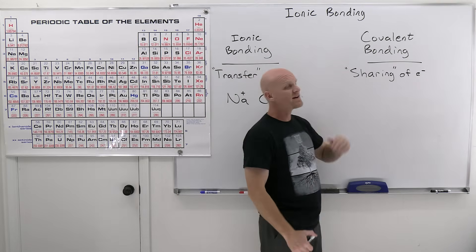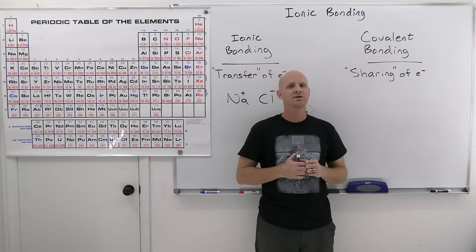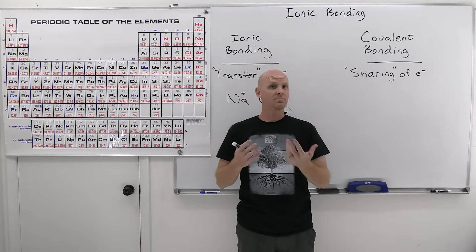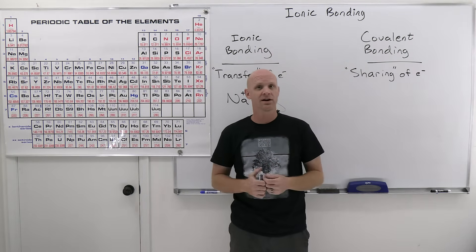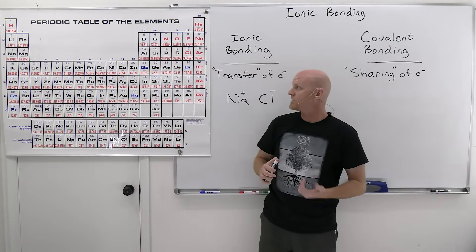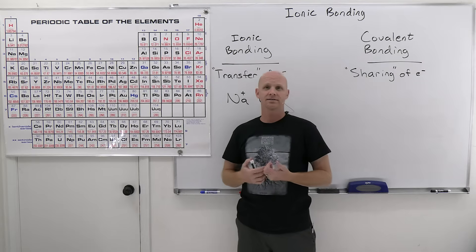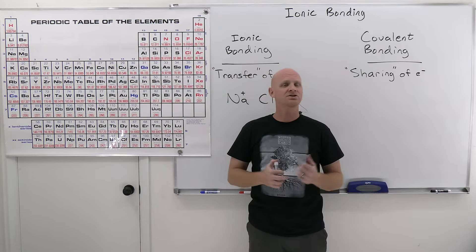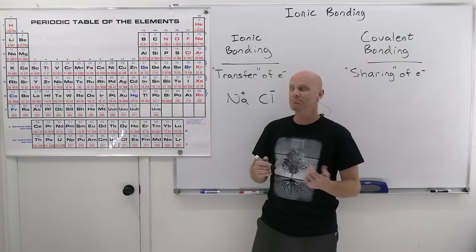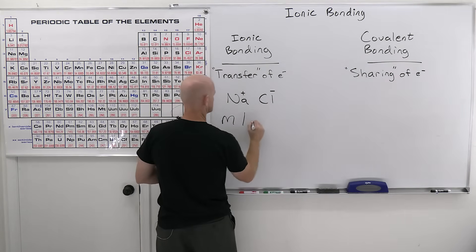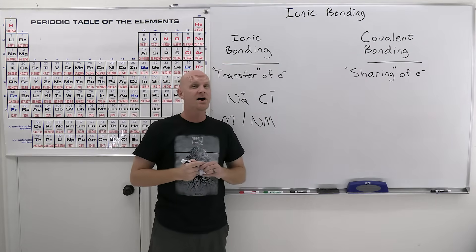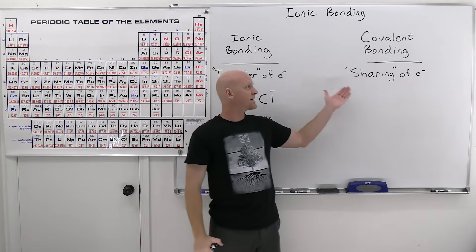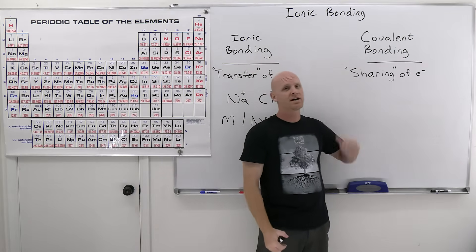In contrast, covalent bonding is the sharing of electrons — electrons don't transfer in any absolute way but are shared in covalent bonds. To identify whether bonds are ionic versus covalent, the easiest route is metal with nonmetal equals ionic. Sodium is a metal, chlorine is a nonmetal. Whereas if you've got two nonmetals, we'll typically identify that as covalent bonding.